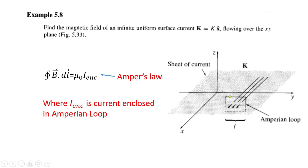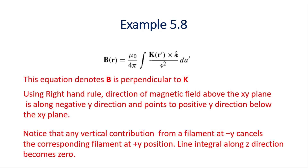This is the surface current flowing along the x-direction — this is the sheet of current. We will use Ampere's law: the closed line integral on the left-hand side equals μ₀ times I_enclosed on the right-hand side, where I_enclosed is the total current enclosed in the Amperian loop.